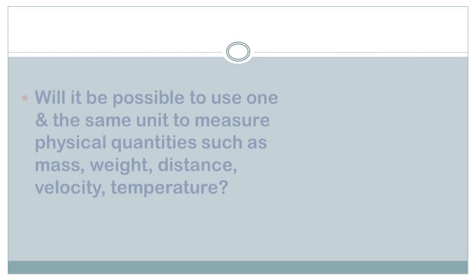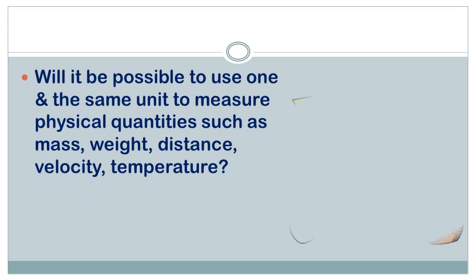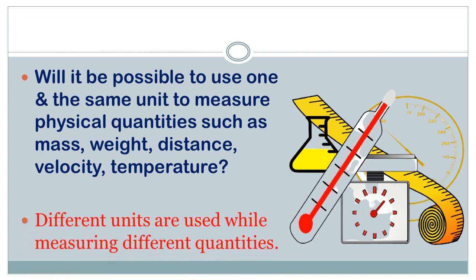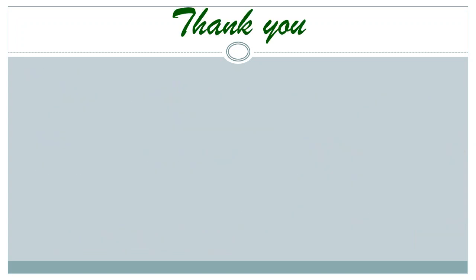Can we use the same unit to measure all physical quantities such as mass, weight, distance, velocity, and temperature? No — since these physical quantities are different from one another, we cannot use the same unit for all of them. Different units are used for different quantities: different units for weight, distance, and temperature such as degree Celsius and degree Fahrenheit. This concludes part 1 of this lesson. We will continue in our next session. Thank you.